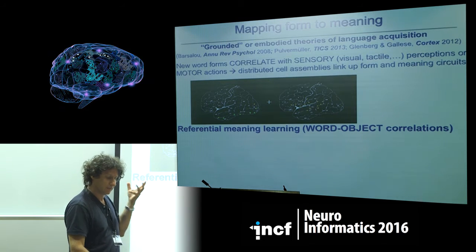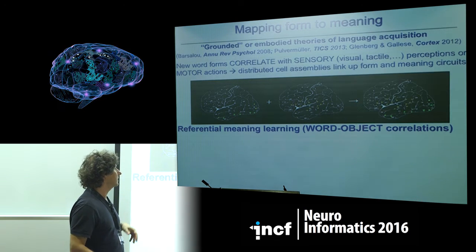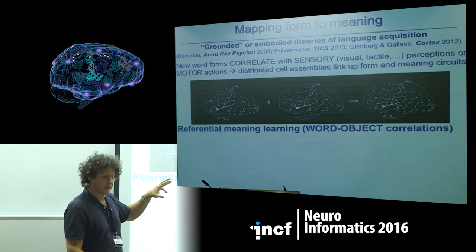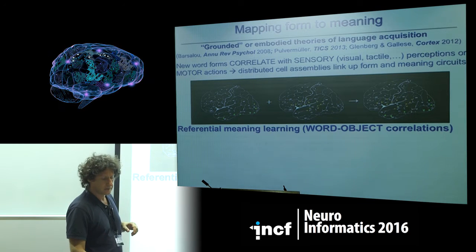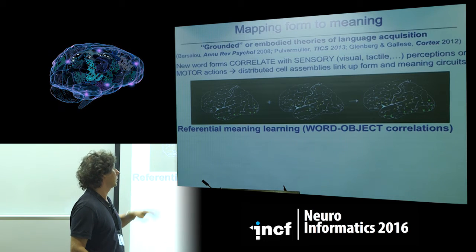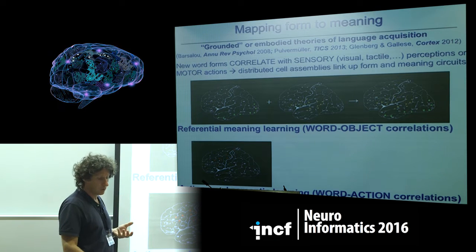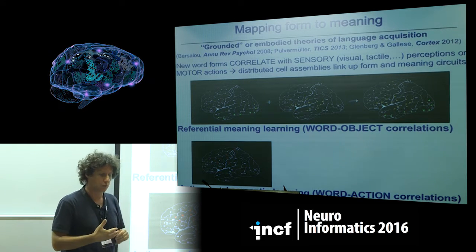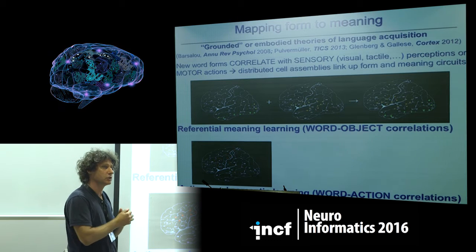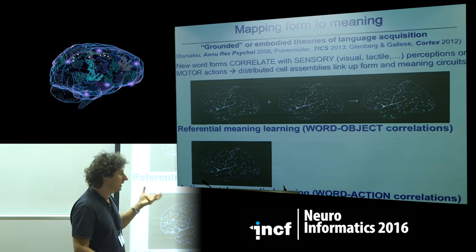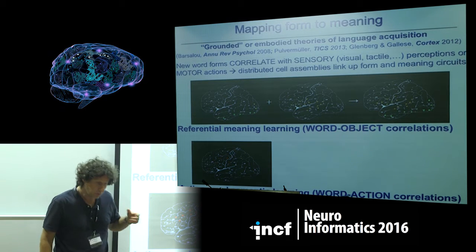The co-presence of activity in perisylvian areas leads to a larger cell assembly circuit which now includes both perisylvian and extrasylvian circuits, particularly in the temporal lobe and the visual ventral stream. The same idea applies when we learn the meaning of action-related words. Words with a strong action component are typically learned while the action is being executed, leading to activity in the precentral, postcentral, prefrontal, and premotor cortices.